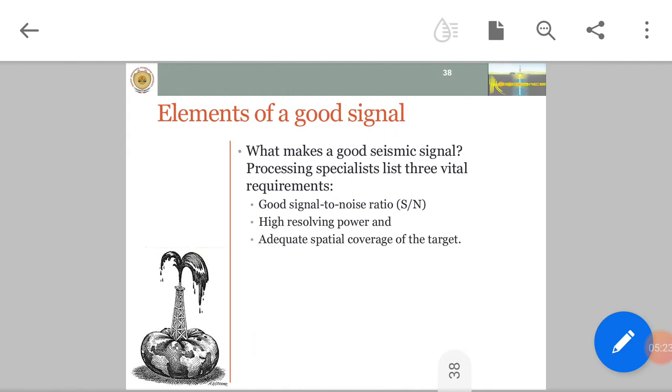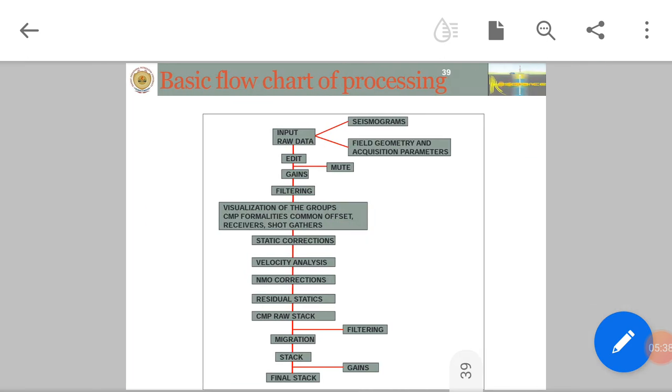What is a good signal? Elements of good signal has three vital requirements: good signal to noise ratio, high resolving power, and adequate spatial coverage of the target. This is the basic flowchart of processing. We have input raw data which is seismic data. We add field geometries and acquisition parameters. Then we edit the data.